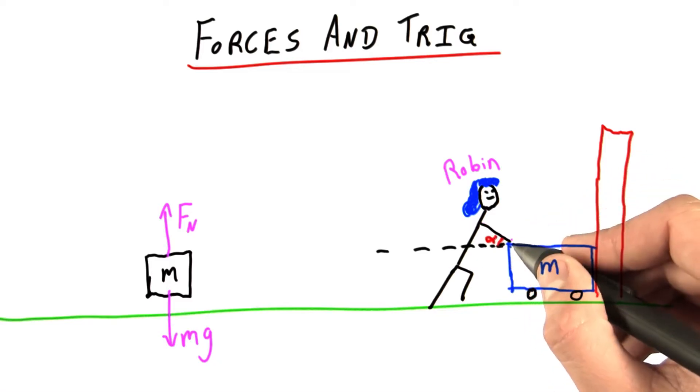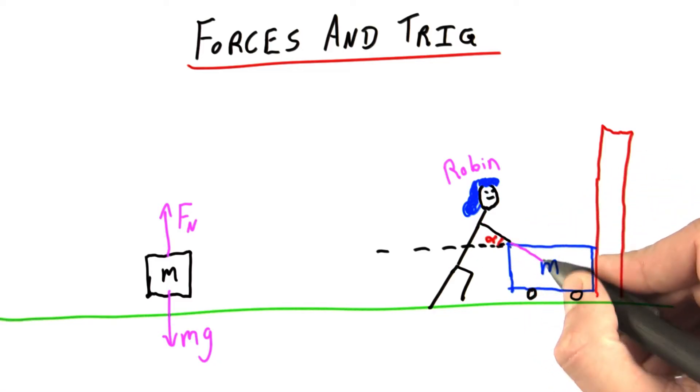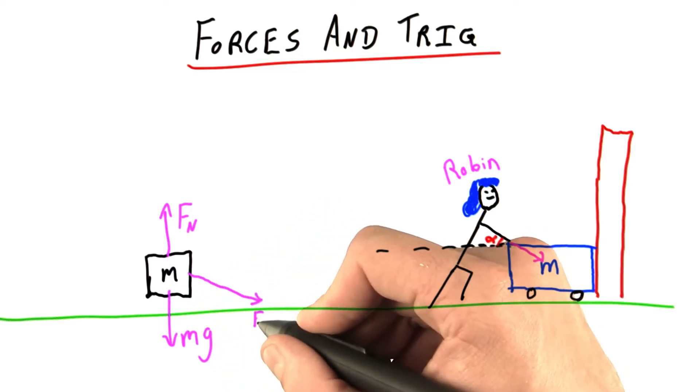We have Robin who's pushing, well, it looks like she's pushing down and to the right. So I'm actually going to put that force over here. Let's label it fr for Robin.